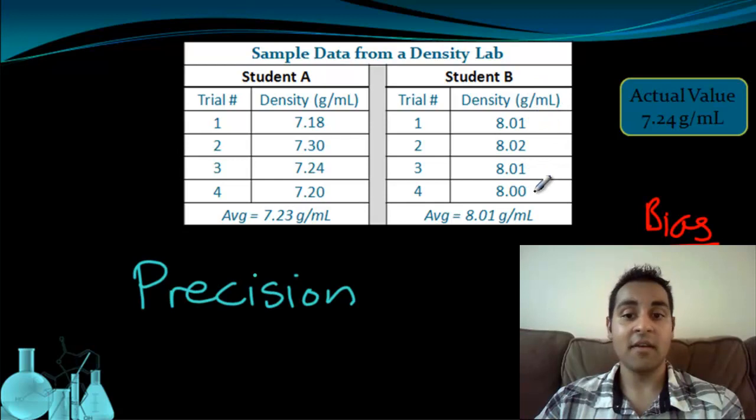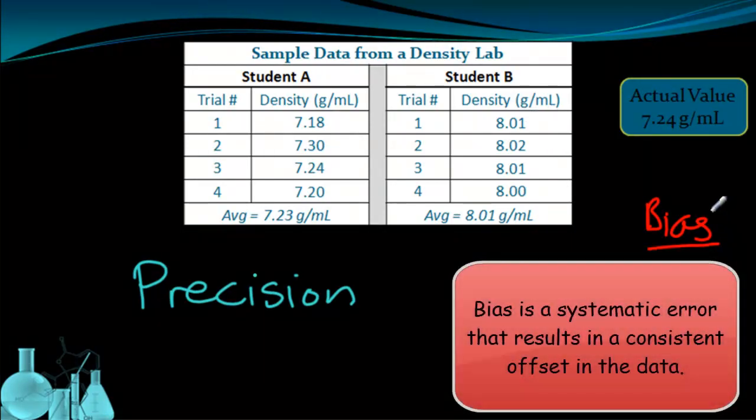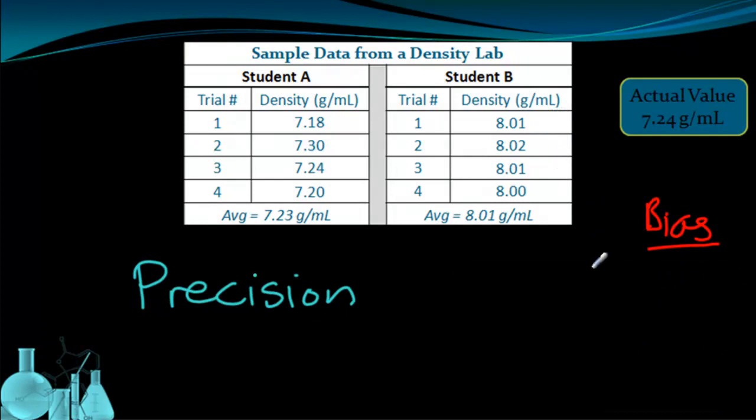The electronic balance that student B was using may not have been calibrated properly. So student B, even though they were doing everything correctly, was getting results that were consistently off by the same amount. So this idea of bias is really referring to a systematic error that would be consistently throwing off your data by the same amount.